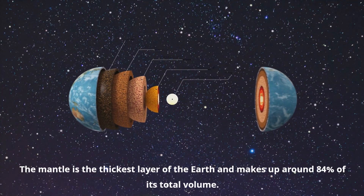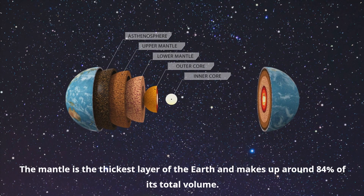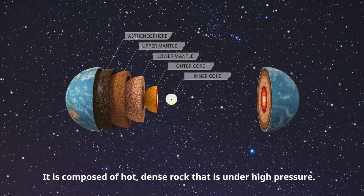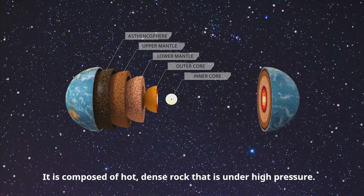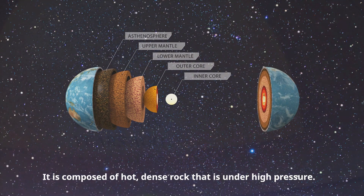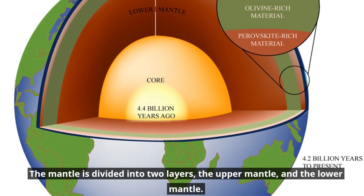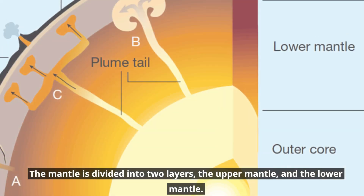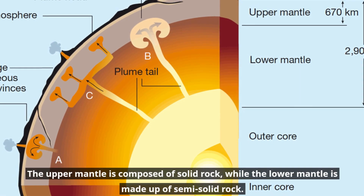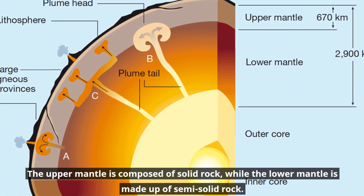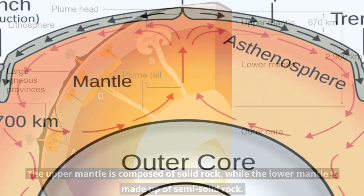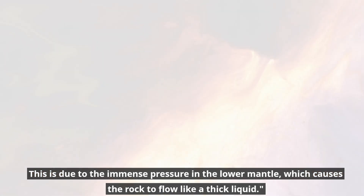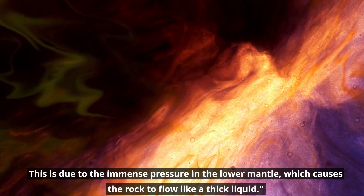The mantle is the thickest layer of the Earth and makes up around 84% of its total volume. It is composed of hot, dense rock that is under high pressure. The mantle is divided into two layers: the upper mantle and the lower mantle. The upper mantle is composed of solid rock, while the lower mantle is made up of semi-solid rock, due to the immense pressure that causes the rock to flow like a thick liquid.